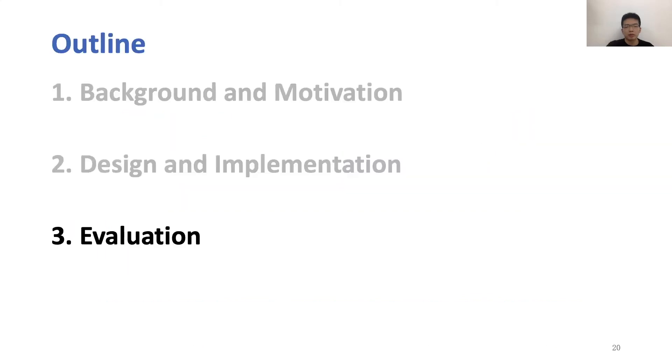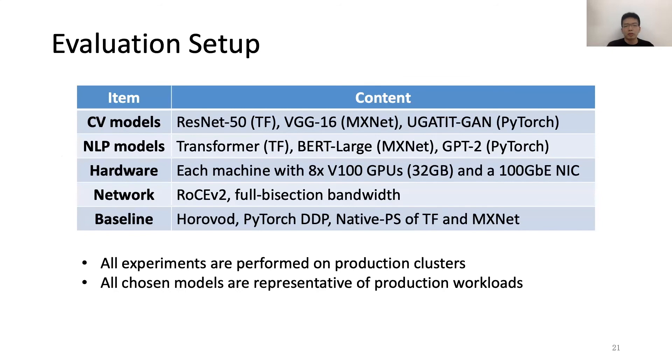Next, we will move on to the evaluation section. We evaluate our system using popular DNN models, including ResNet-50, VGG-16, WGAN-GP, Transformer, BERT-Large, and GPT-2. The machines we use have eight V100 GPUs and a 100-gigabit NIC. The network is RoCE v2 with full bisection bandwidth. And the baseline we compare are Horovod, PyTorch DDP, native PS of TensorFlow and MXNet. And all of our experiments are performed on production clusters. And all chosen models are representative of production workloads.